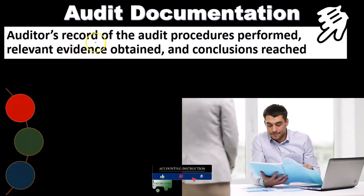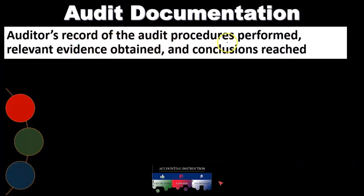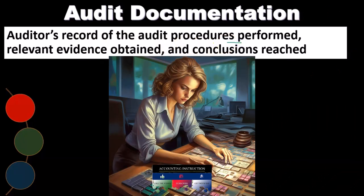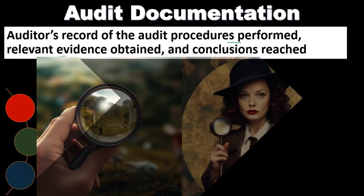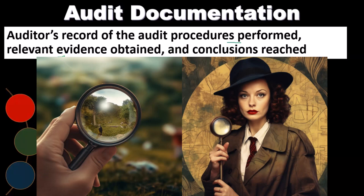The audit documentation — auditor's records of audit procedures performed — tells us what we actually did within the audit in order to get evidence for the assertions being made, or for the opinion that we give on the financial statements. We also document the relevant evidence obtained, and the conclusion that we reach. Our conclusion will be based on the evidence — we're going to go where the evidence leads.